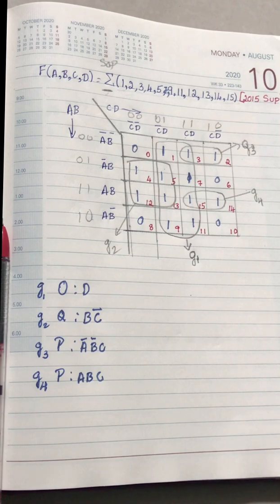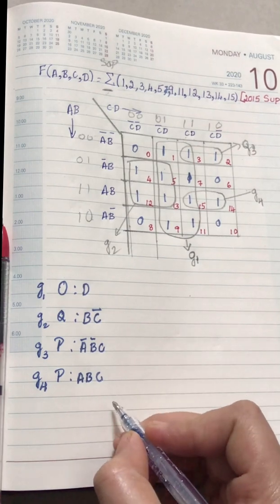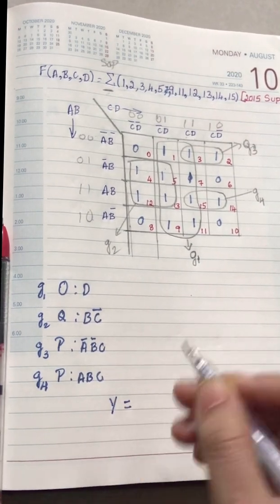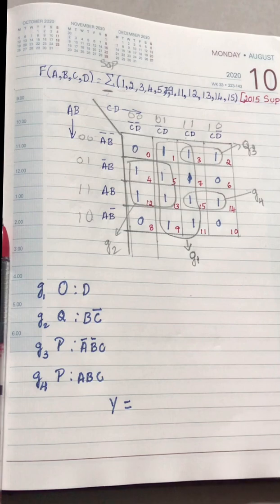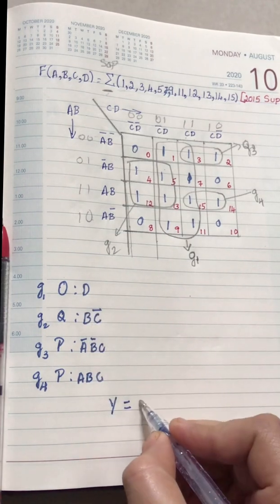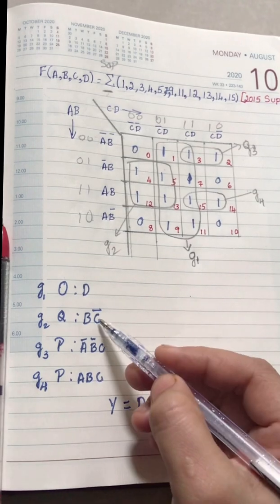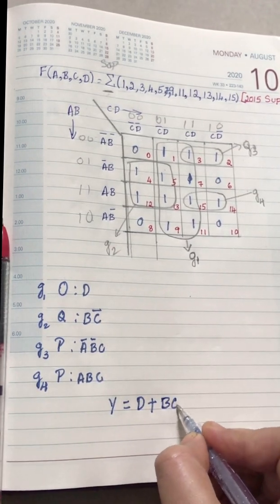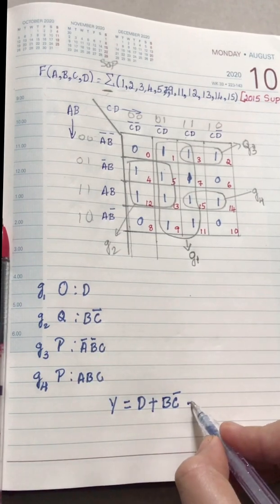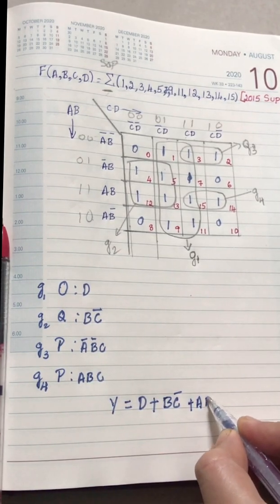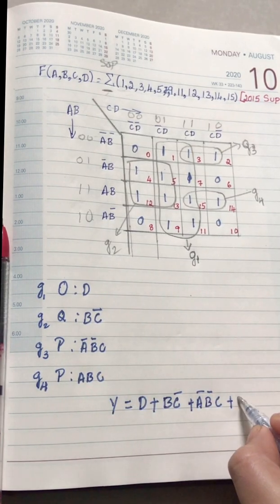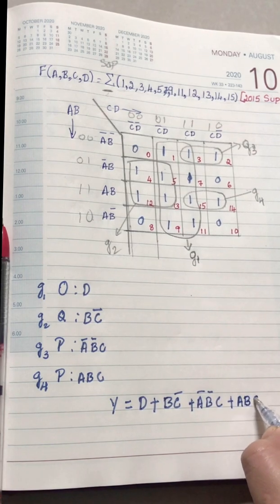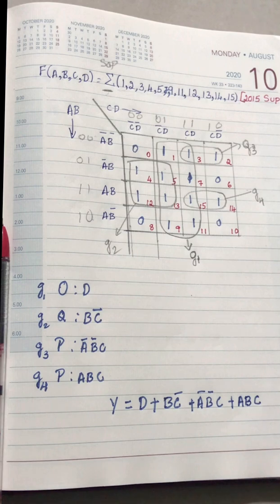The final simplified expression is: y = d + b c̄ + ā b̄ c + a b c. Each term comes from one group — Group 1 gives d, Group 2 gives b c̄, Group 3 gives ā b̄ c, and Group 4 gives a b c. This is the answer.